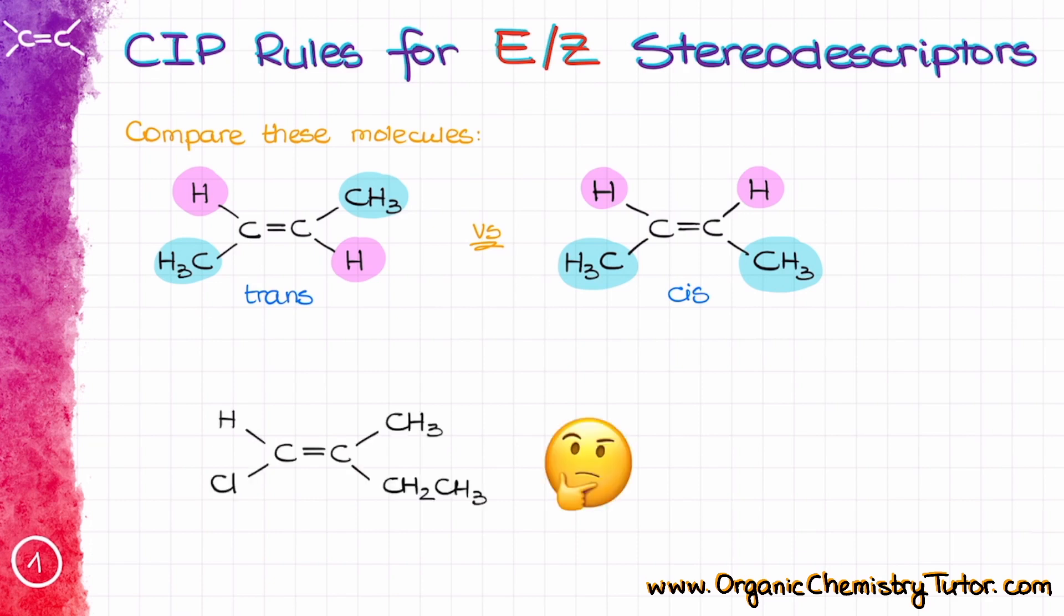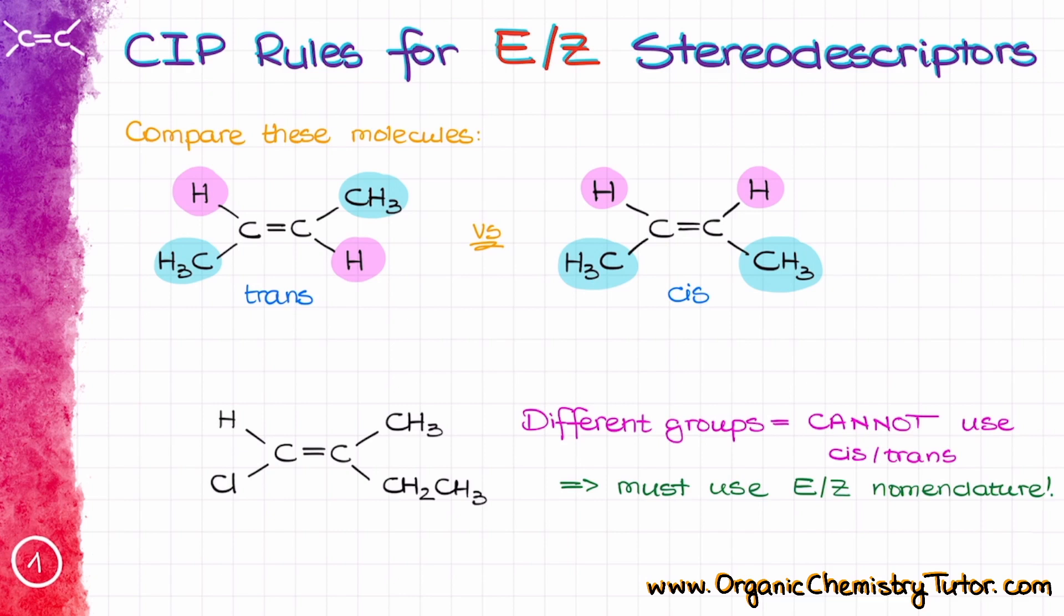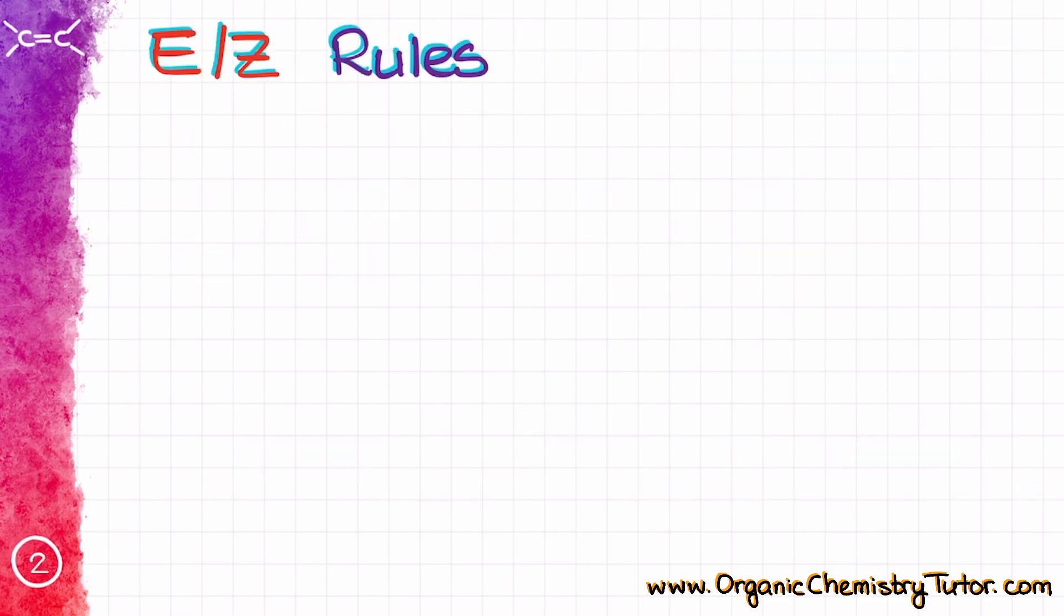Well how about something like that though? Is it going to be a cis molecule? A trans molecule? And if we are going to be comparing groups, which groups are we going to be comparing to begin with? In cases like this, when we cannot use cis or trans stereodescriptors, we have to then use the E or Z nomenclature.